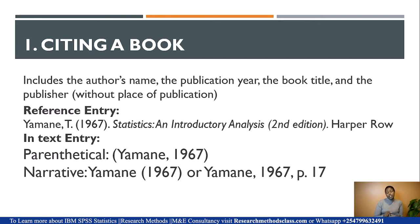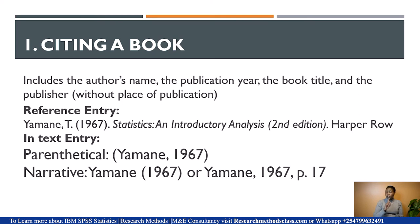In the in-text citation, if you are showing the page number, you include the year of publication and then the page. The page is normally indicated as p. followed by a full stop and then the page number. If you are quoting from two pages, for example pages 17 and 18, then it will be pp.17–18.